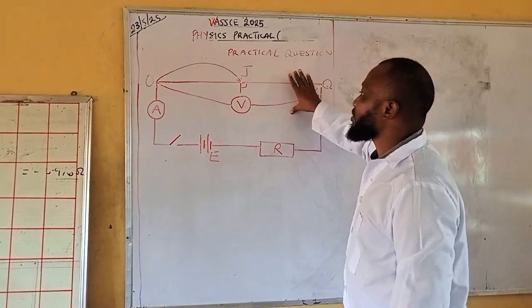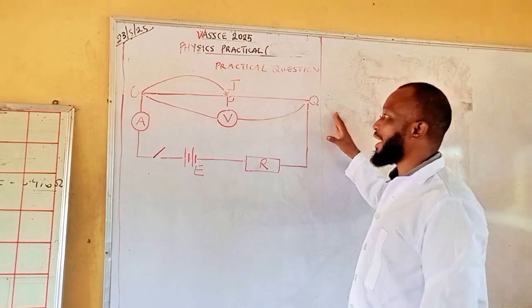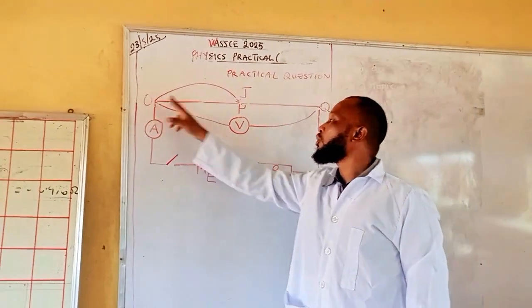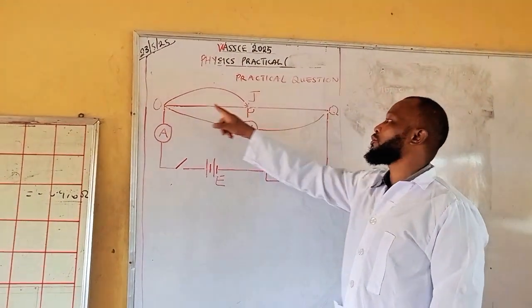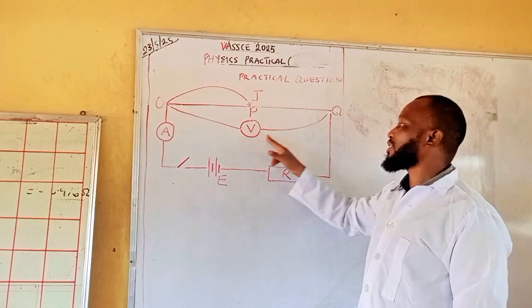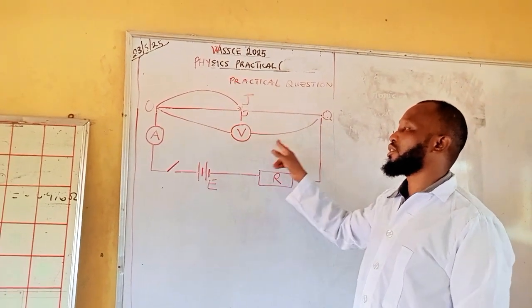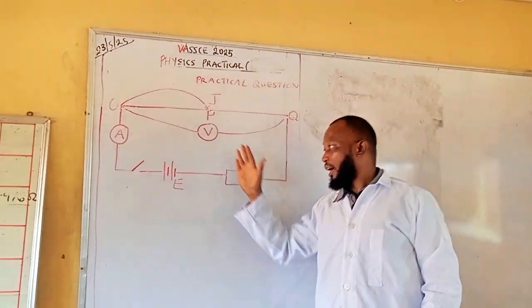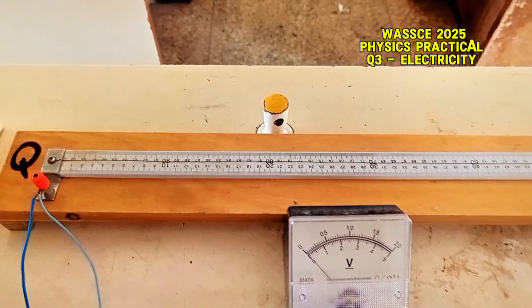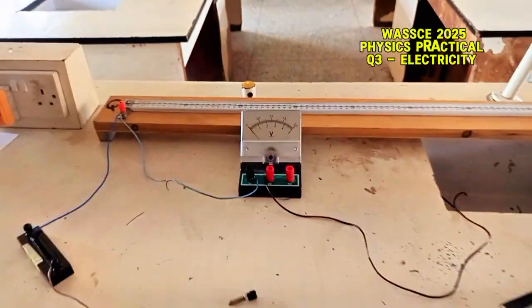The circuit diagram is going to be like this. You have your OQ, which is your potentiometer, and the voltmeter is connected to it with something like this. And the rest like that. Now, so this is the setup.